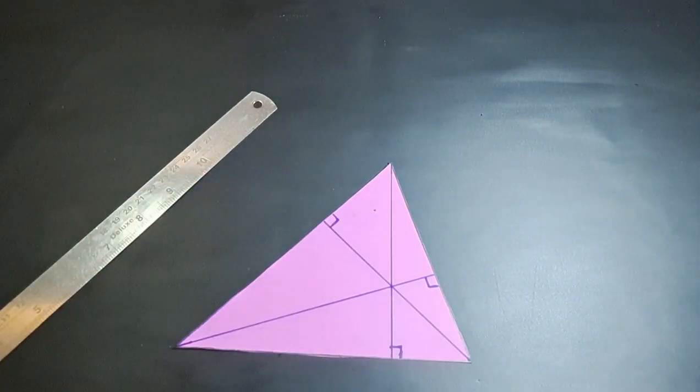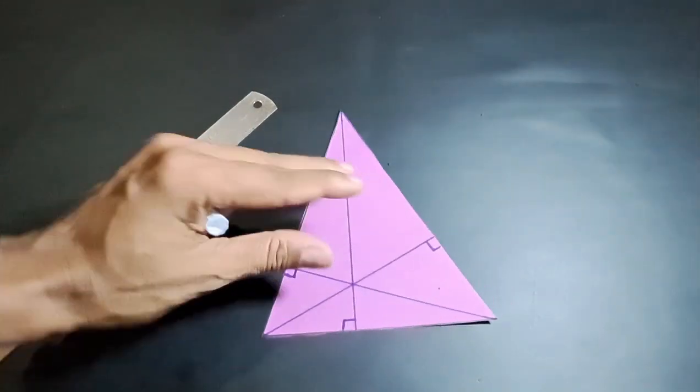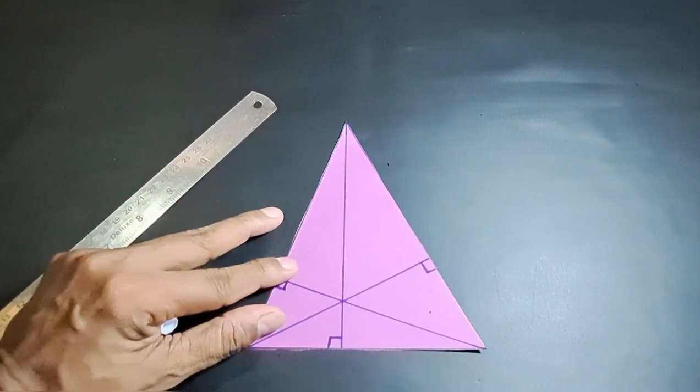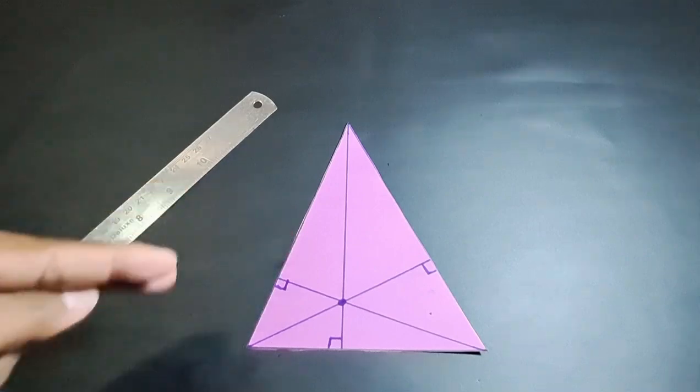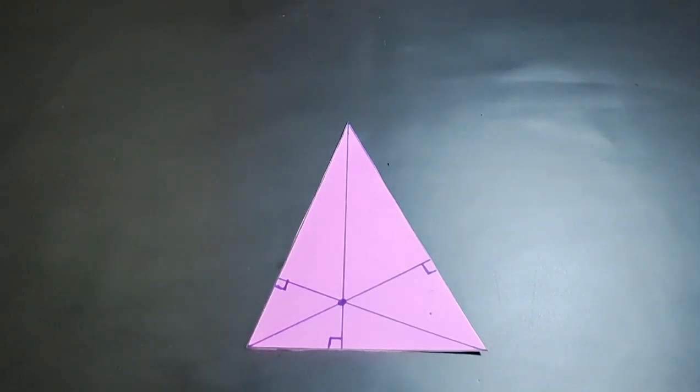And surprisingly, what happens is the three altitudes are passing through the same point. And so it is the property of a triangle that whenever you draw three altitudes, they always pass through the same point or they are called concurrent.